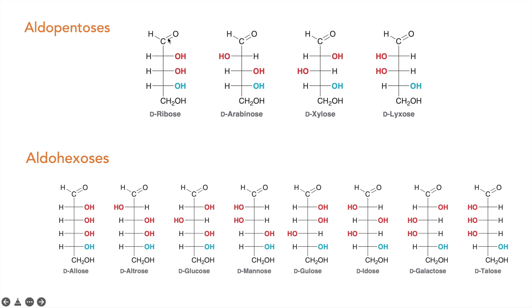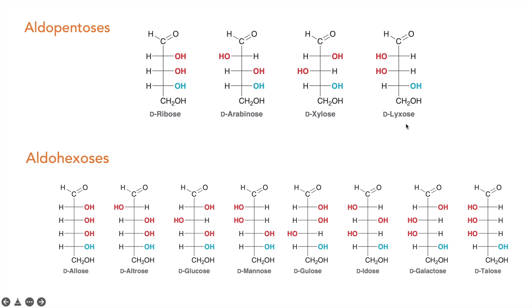For aldopentoses, there are five carbons with one aldehyde carbon, leaving three chiral carbons. So 2^3 = 8 enantiomeric structures, or four enantiomeric pairs. The four D-aldopentoses are D-ribose, D-arabinose, D-xylose, and D-lyxose, with corresponding L-forms: L-ribose, L-arabinose, L-xylose, and L-lyxose.